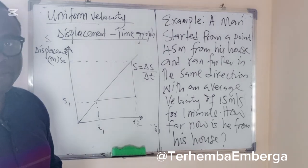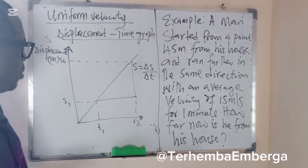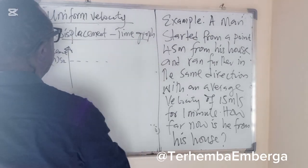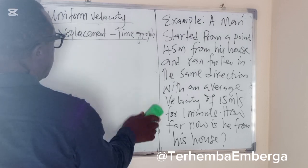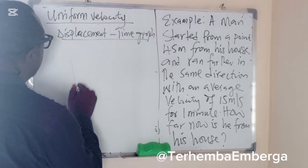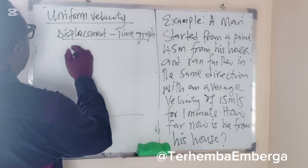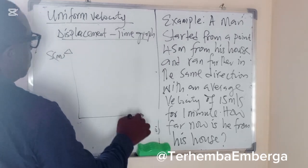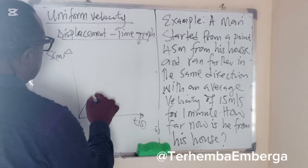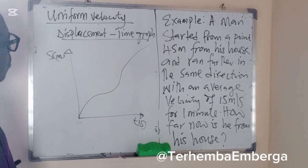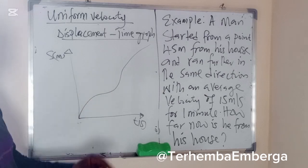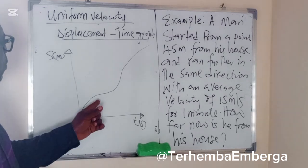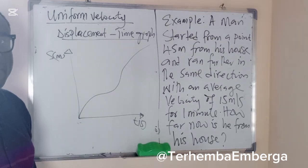Whereas if the rate of change of displacement is not constant, in that case we have something like a curve or a non-linear graph. If you have something like this — displacement in meters against time in seconds — you can see the graph is not linear. It is not a straight-line graph. Rather, what we have is a curve.